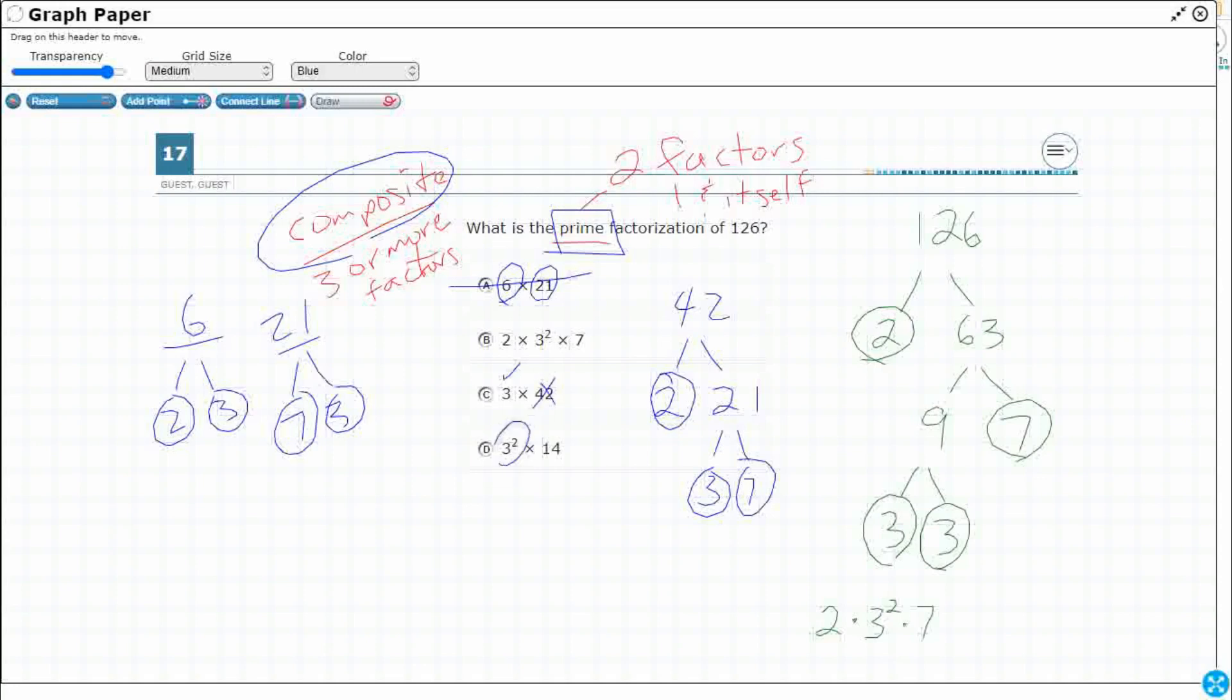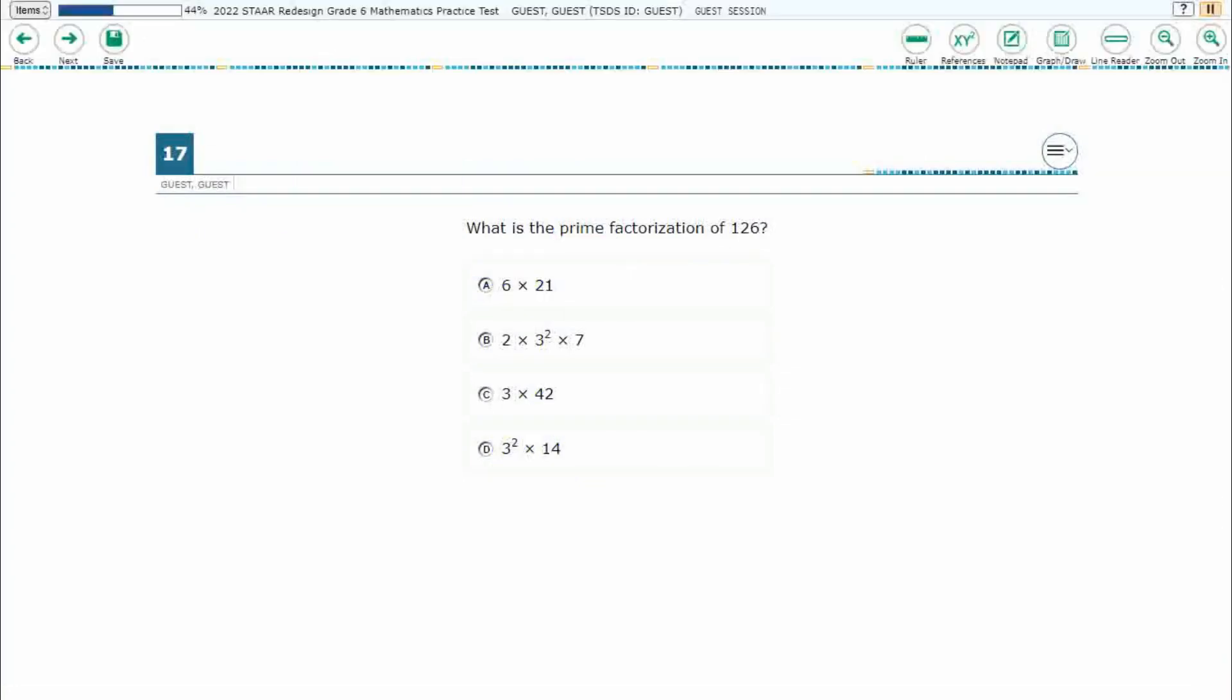Now, three squared is good, because three is prime, and you can have an exponent, but 14 is not prime. It's composite. Two times seven works in addition to one times 14. So, just looking at it, I was looking at A, C, and D, and I was thinking composite, composite, composite. I don't even need to do the prime factorization. B is the only one that has all prime numbers, and that is our answer.